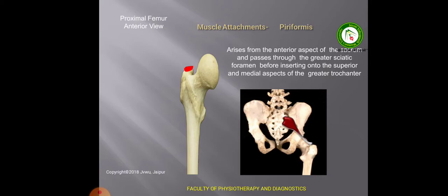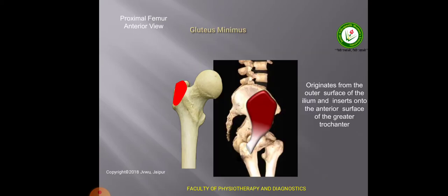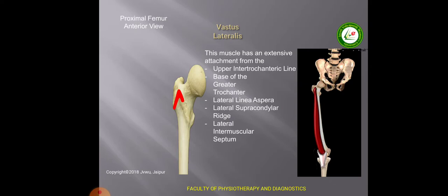Now the muscle attachments of the femur. On the tip of the greater trochanter we have the attachment of the piriformis muscle. This muscle is the key muscle of the gluteal region and it arises from the anterior surface of the sacrum, and is inserted on the tip of the greater trochanter. On the anterior surface of the greater trochanter, we have the insertion of gluteus minimus. Gluteus minimus arises from the hip bone and inserts on the anterior surface of the greater trochanter. Then the vastus lateralis is a muscle of the front of the thigh, arising from the upper and lateral part of the intertrochanteric line, the anterior and lower border of the greater trochanter, the lateral part of the linea aspera, the lateral supracondylar ridge, and the lateral intermuscular septum.